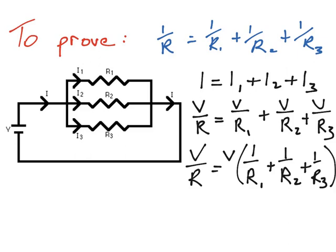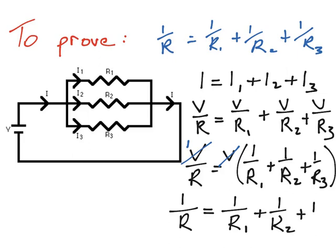The last thing we can see is that we can cancel off the voltage on each side. V divided into itself on both sides leaves us with 1 over R on the left-hand side, and this gives us our equation from the beginning: 1 over R is equal to 1 over R1 plus 1 over R2 plus 1 over R3, and that's our equation proven.